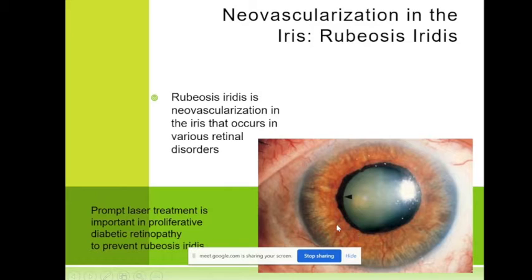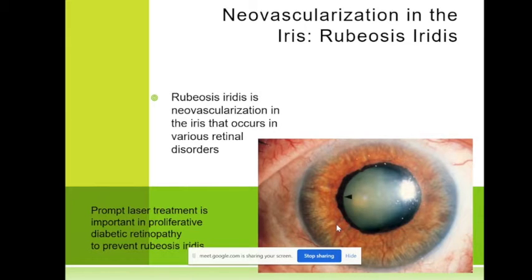This usually happens with two disorders in the retina: one is diabetic retinopathy, and the other is occlusion of a retinal vein — something like an infarction of the retina. These new blood vessels are very dangerous.